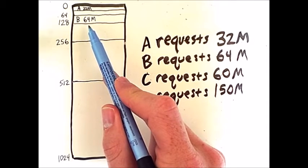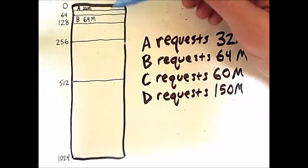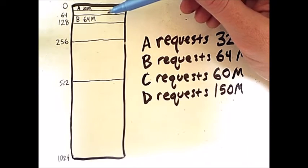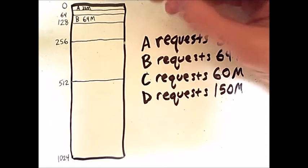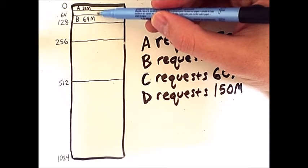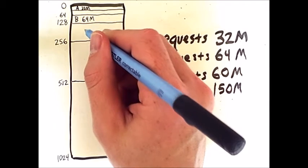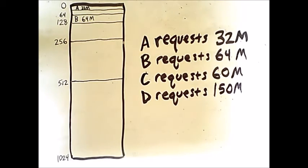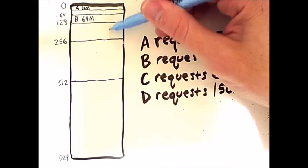However, the upper portion is filled with processes that exclude process C from being placed here. There's only 32 megabytes of free space in this region of memory here, so we will instead search down and split this region of 128 megabytes into two regions of size 64.